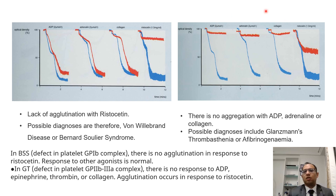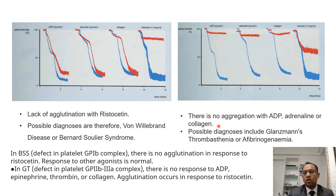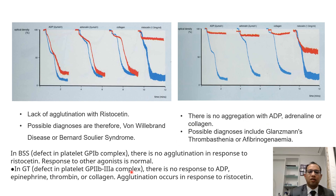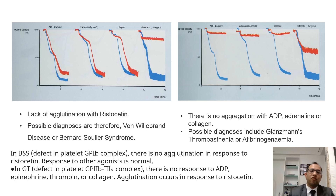In the second scenario, all agonists show absent agglutination except ristocetin — the exact opposite of Bernard-Soulier syndrome. This occurs in Glanzmann's thrombasthenia or afibrinogenaemia, representing a defect in glycoprotein 2b3a. Flow cytometry is used to confirm: using CD markers you can distinguish whether it is Glanzmann's thrombasthenia or Bernard-Soulier syndrome.